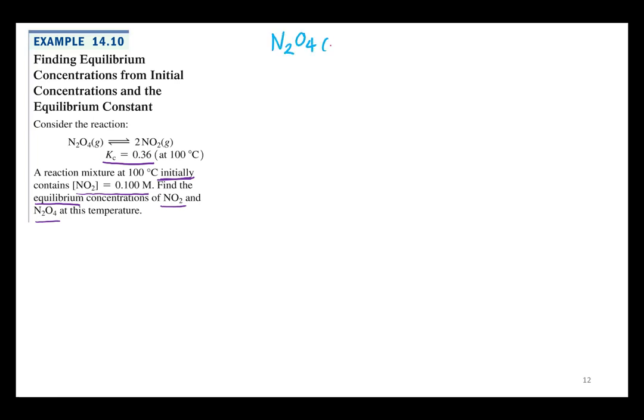So we have N2O4 in equilibrium with 2NO2. There's of course I for initial concentrations, C for change, and E for equilibrium concentrations. And what do we got? Initial concentration of NO2 is 0.1. That's our product, but that's okay. That's a reactant for our reverse reaction, right?